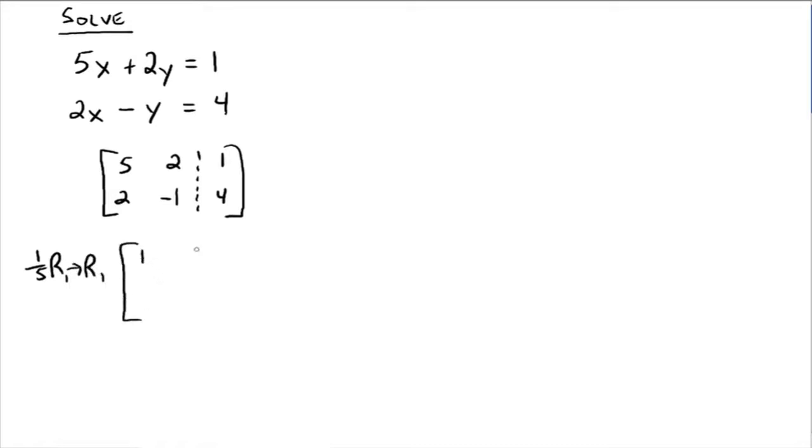So that's going to be 1. Now you have 1 fifth times 2. Well, that's 2 fifths. Again, you can't be afraid of the fractions. And then 1 times 1 fifth is 1 fifth. All right, we didn't do anything to row 2, so we'll just leave row 2 alone at the moment.